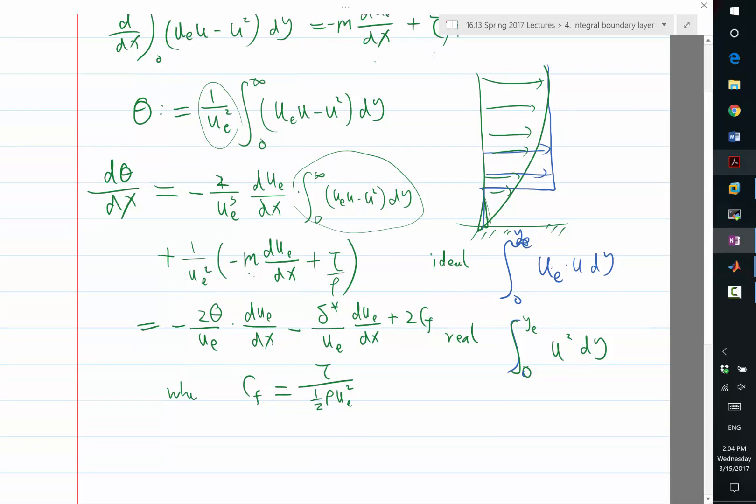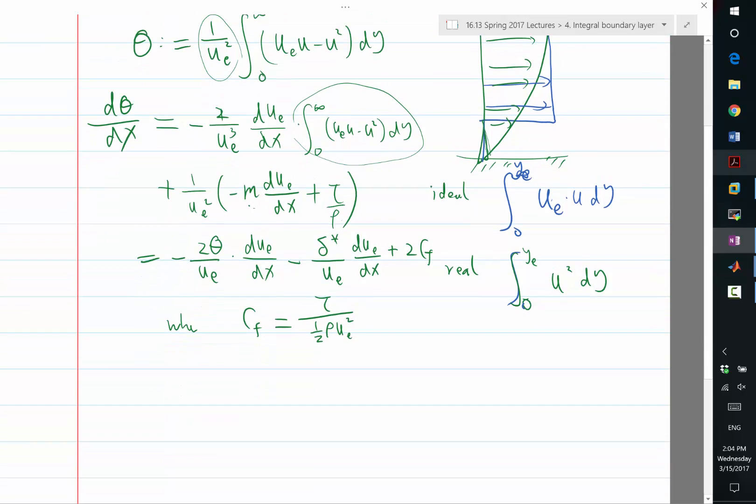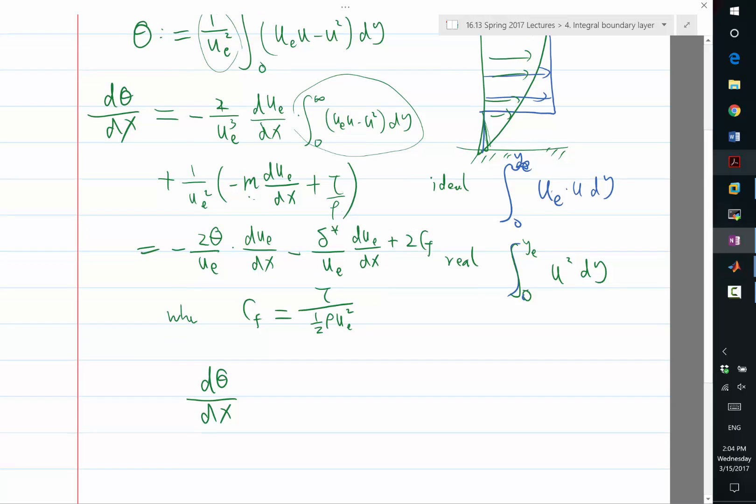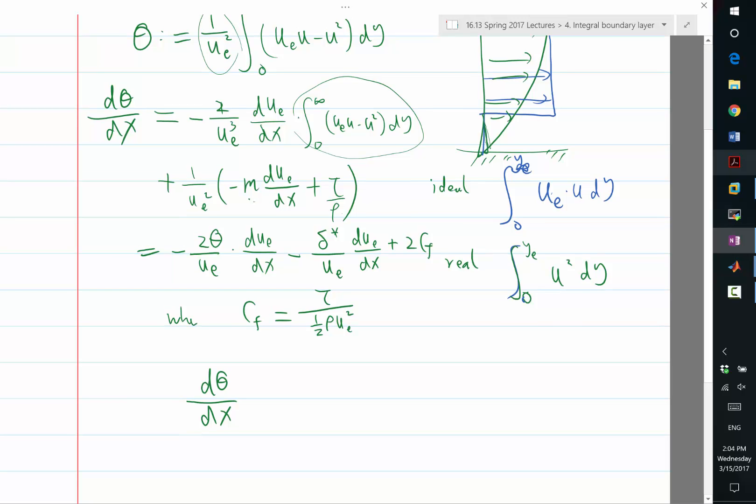So, what we did is we derived an equation, dθ/dx. We derived the equation for dθ/dx without anywhere involving the boundary condition of the inviscid equivalent flow, because we are combining two equations, the mass conservation equation and momentum conservation equation. By combining these two, we get just an evolution of the thickness itself.